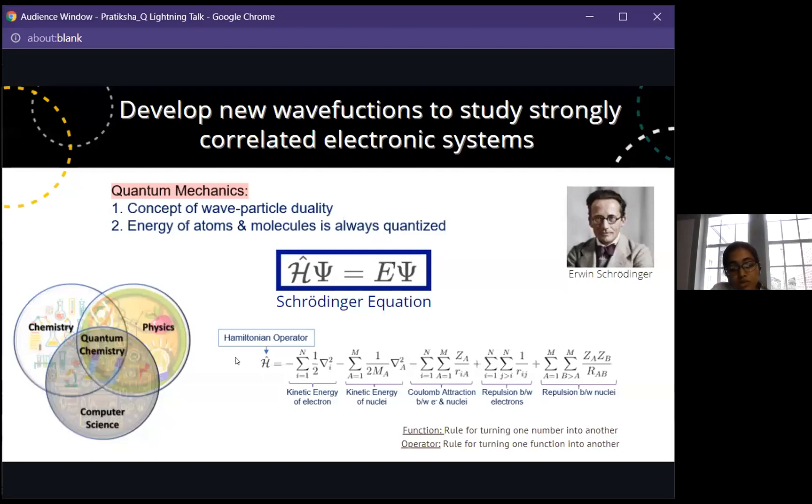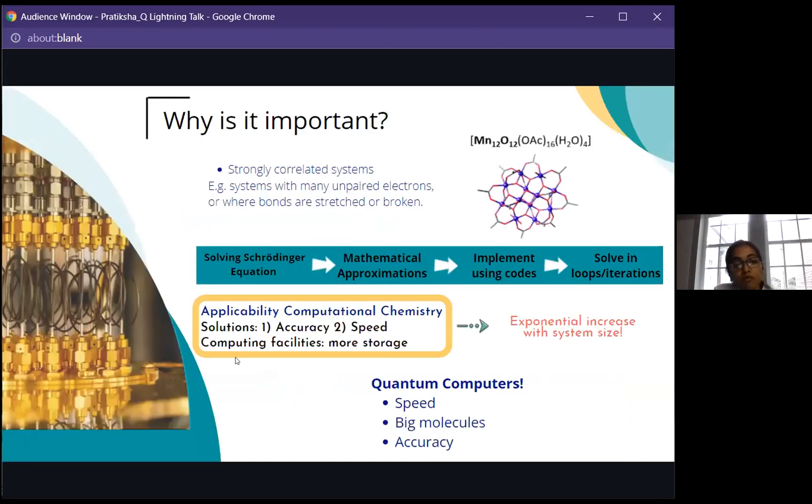But there is one major limitation of these methods to study strongly correlated systems. What are strongly correlated systems? Those are the systems which contain so many unpaired electrons or where bonds are stretched or broken. My current project is aimed to develop new wave functions which can help us to ease out the study of such big molecules which are strongly correlated systems. As you can see there is a picture of one manganese complex compound which has more than 700 electrons. It is a very tough task to study it using classical computers because it requires more computational cost. As the size of the system increases, the computational cost also increases exponentially and that's why quantum chemistry is seeking help of quantum computers to study big molecules with more accuracy and more speed.